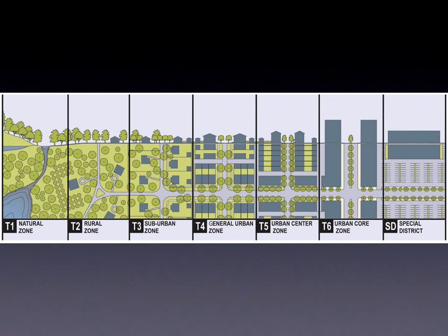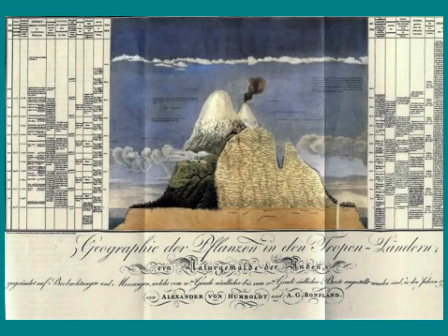The current popularity of Transect-based design, like Figure 3.1, emerged from Andres Duany's work in the Congress for the New Urbanism. However, similar analytical tools were used as early as 1793 with the Prussian naturalist and explorer Alexander von Humboldt. Figure 3.2 depicts his Transect-based vertically magnified look at the tip of South America from the Atlantic to the Pacific Oceans.